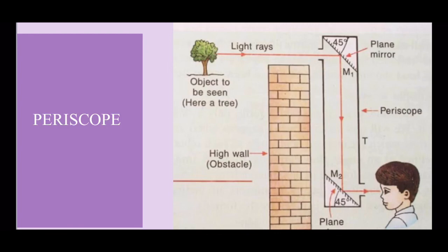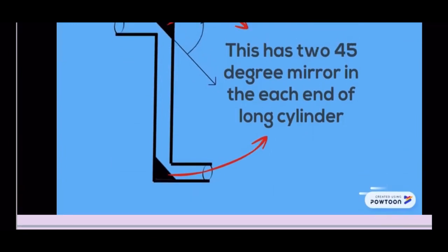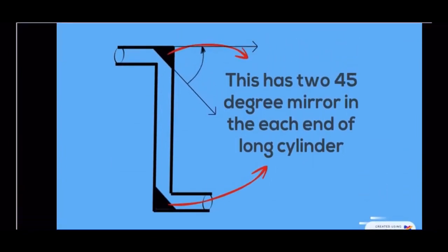Periscope consists of a long tube with two holes. Two plane mirrors are adjusted at the corners which are parallel to each other. And these two mirrors are arranged at an angle of 45 degrees inside the tube.